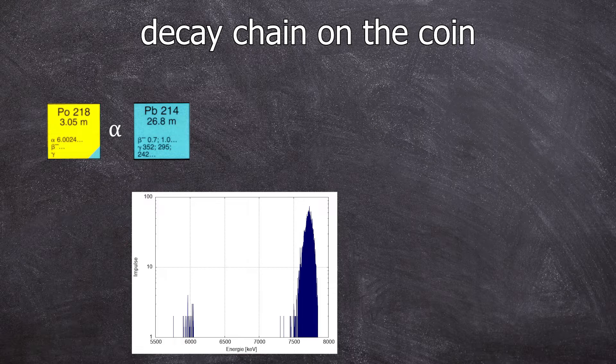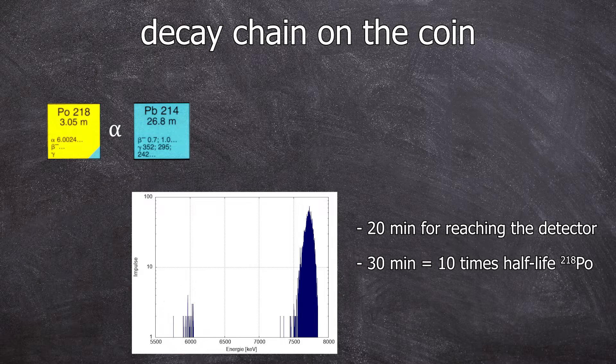Upon arrival, the alpha detector can now see that there is still a very small amount of polonium 218 left, which makes sense because it took me about 20 minutes to get there.